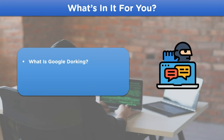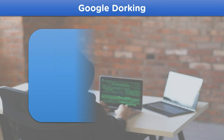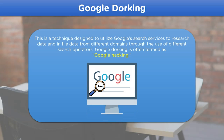For today's agenda, we'll understand what exactly Google Dorking is, whether it is legal to practice, and lastly some of the search operators which can be used for Dorking. Google Dorking is a way to utilize the Google search engine to search for different types of data and information that is generally not available for public view. This is done by using Dorking operators, which is also the reason why Google Dorking is often termed as Google hacking.